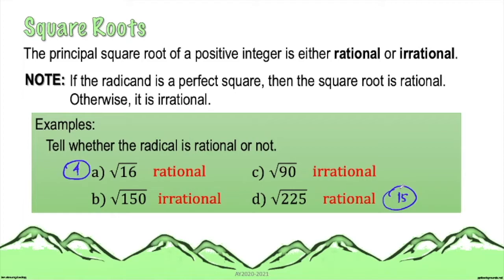For irrational numbers, we can still get the values, but we are only going to estimate. That is by using a certain method called the divide and averaging method. Here are the steps.